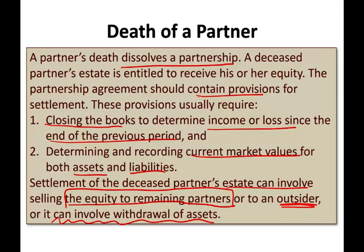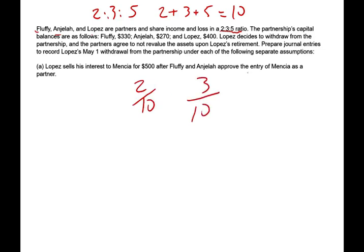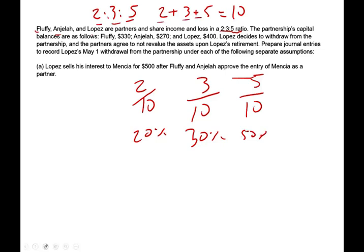The best way to illustrate all these concepts is to work an example. We have Fluffy, Angela, and Lopez as partners, and they share income and loss in the ratio of 2, 3, and 5. Two plus three plus five equals ten, so Fluffy has two-tenths (20%), Angela three-tenths (30%), and Lopez five-tenths (50%). Whatever ratio they give you, you add them up and find the relative proportion for each — this will become useful when we do liquidation.